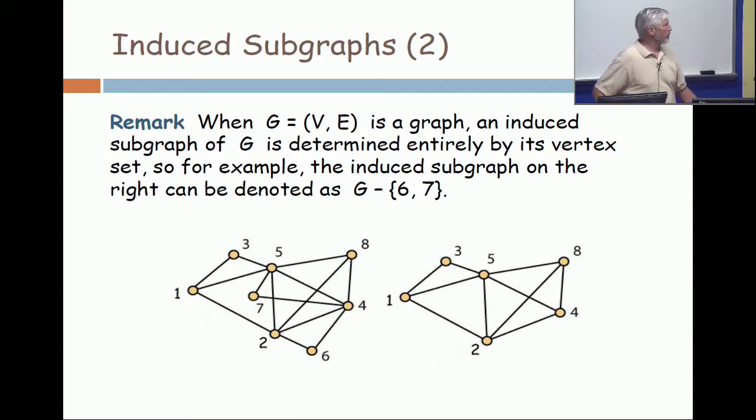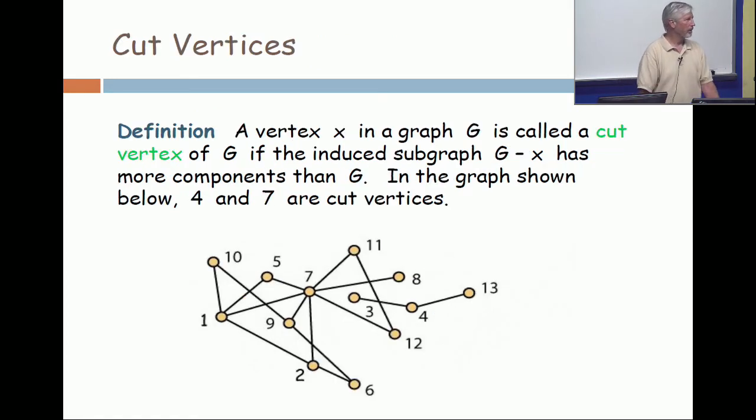And when people write that G minus 6, 7, if it's just one vertex, they'll often just say G minus 6 and leave off the braces. Again, the basic philosophy being mathematicians can be selectively lazy. Okay, our next concept is the notion of a cut vertex.